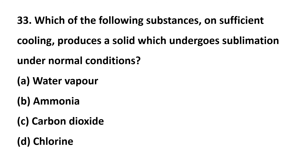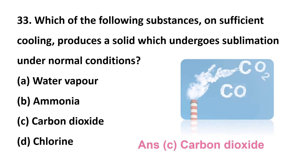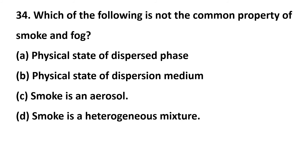Question 33: which of the following substances on sufficient cooling produces a solid which undergoes sublimation under normal conditions — option A: water vapour, option B: ammonia, option C: carbon dioxide, option D: chlorine? The correct answer is option C: carbon dioxide. When we cool carbon dioxide, it produces a solid and that solid undergoes sublimation.